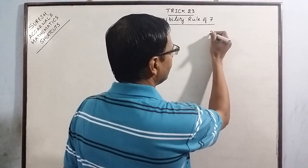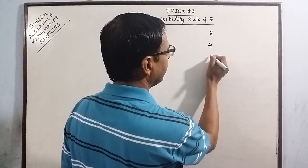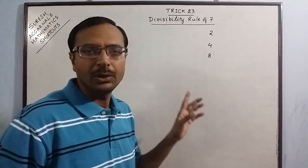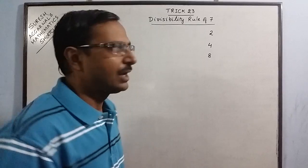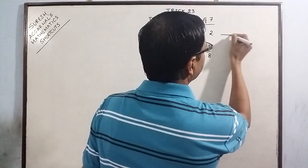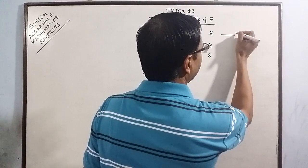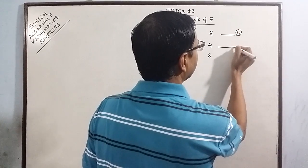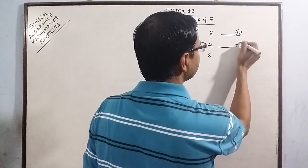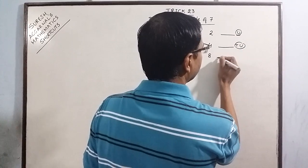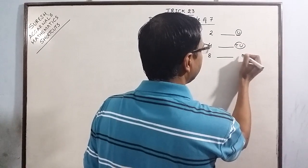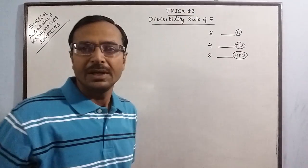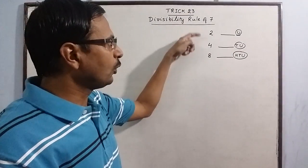Say for 2, 4, and 8, for these 3 numbers we need to remember the divisibility rule together. The whole number along with the unit digit, the whole number along with the units and tens digit, entire number with unit, tens and hundred digit. For 2, 4, and 8.